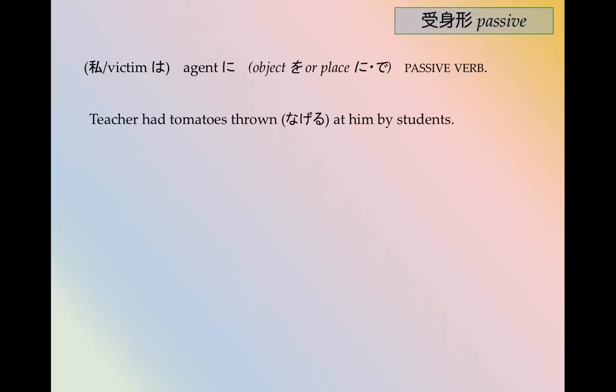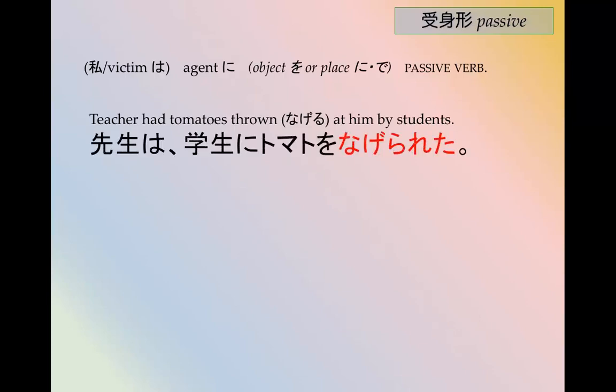I've tried creating some examples. Teacher had tomatoes thrown at him by students. So the victim is the teacher — 先生は. The agent, the perpetrator, is the students — 学生に. The objects are tomatoes — トマトを. And then 投げる in the passive — 投げられた. So it comes together as: 先生は学生にトマトを投げられた.